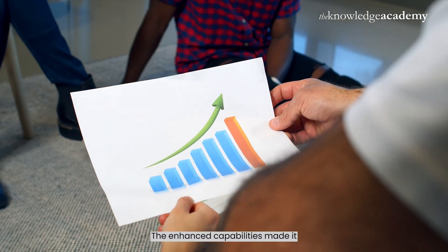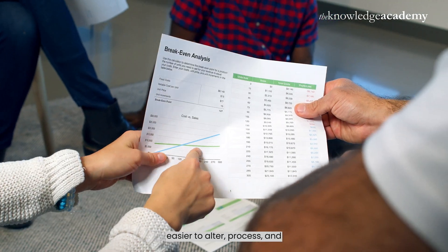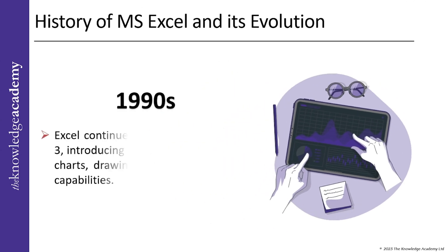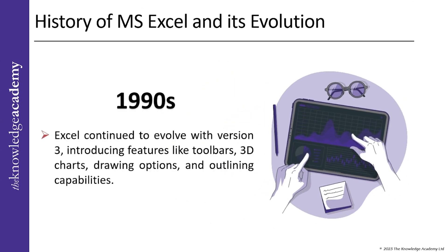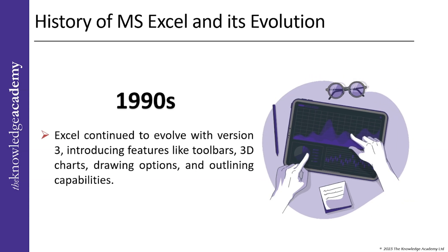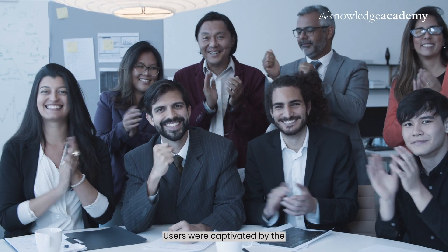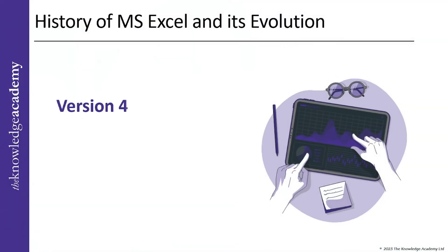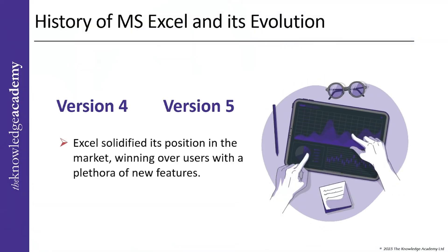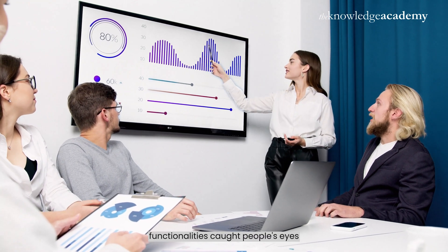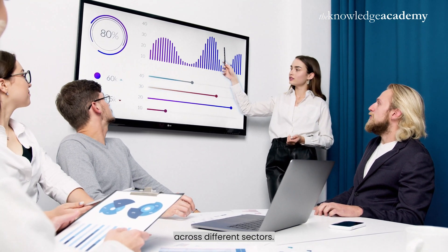The enhanced capabilities made it easier to alter, process, and view spreadsheet data. As we entered the 1990s, Excel continued to evolve with version 3, introducing features like toolbars, 3D charts, drawing options, and outlining capabilities. Users were captivated by the newfound versatility of the software. With version 4 and version 5, Excel solidified its position in the market, winning over users with a plethora of new features, and its ease of use caught people's eyes across different sectors.